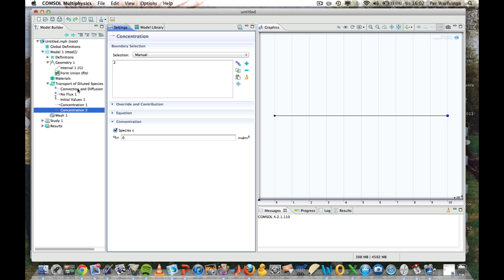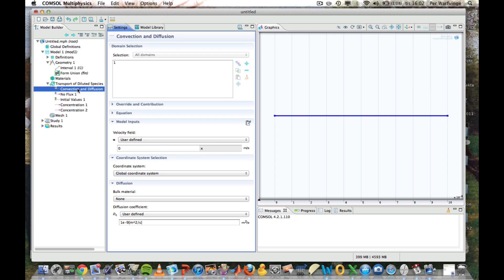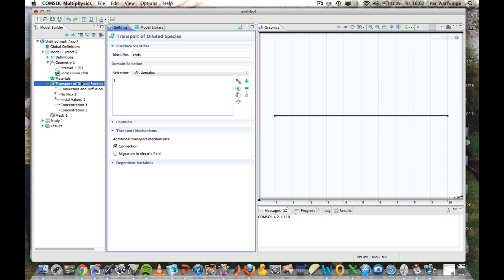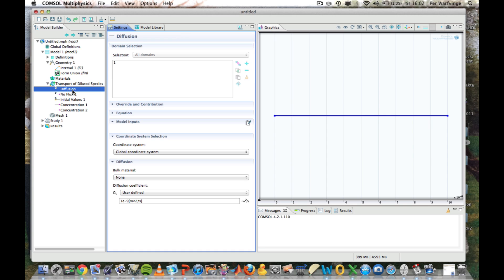Now it's time to go to convection and diffusion. Well, first of all, we have no convection. We can set that right here if we want to. No convection. Then we just select diffusion. And the diffusion coefficient that's already been selected, the default value, is exactly the one we want.